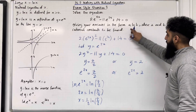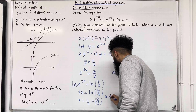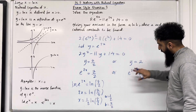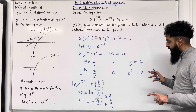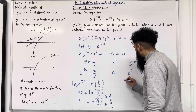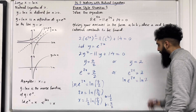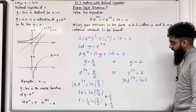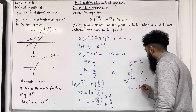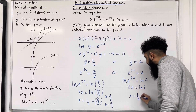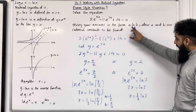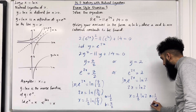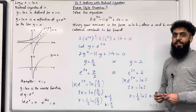For e^(2x) = 2: apply natural logs on both sides — ln(e^(2x)) = ln 2. The ln and e cancel out, giving 2x = ln 2, so x = (1/2)·ln 2. In this case a = 1/2 and b = 2. That completes exam style question 3.